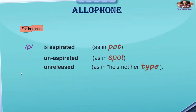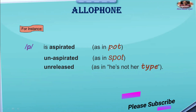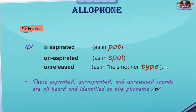Here is another example: the same phoneme /p/ is pronounced differently in different words. In 'pot,' it is aspirated — a puff of air comes out of the mouth. In 'spot,' it is unaspirated — the air puff does not come out. In 'type,' the /p/ is unreleased. So the same phoneme /p/ is pronounced as /pʰ/, /p/, and /p̚/ in different words. This difference or variation of the same phoneme in different pronunciations is called an allophone. These aspirated, unaspirated, and unreleased sounds are all identified as the phoneme /p/.